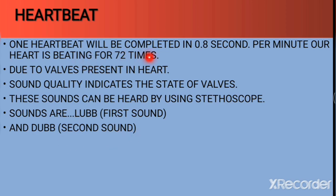The normal heartbeat is 72 times per minute, and one heartbeat is completed in 0.8 seconds — in that time you hear lub-dub. These sounds are produced by contraction, not relaxation. The lub sound occurs when the tricuspid and bicuspid valves close as blood moves from auricles to ventricles, preventing backflow. The dub sound occurs when the pulmonary and aortic valves close as blood moves into the vessels, again preventing backflow. This detail is not covered in depth in your current textbook — you will study it in 10th standard.